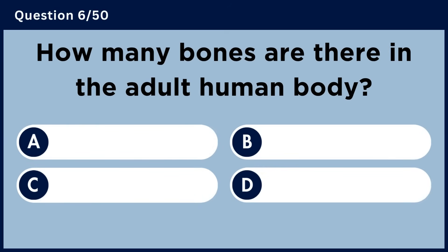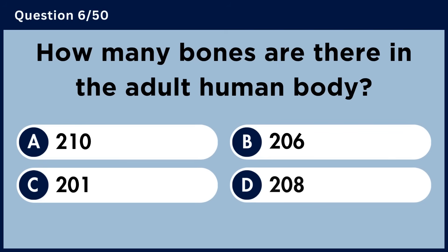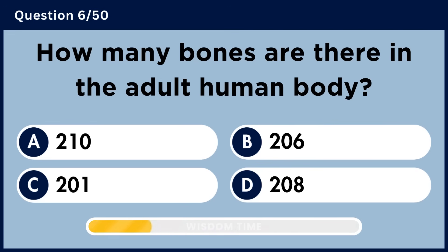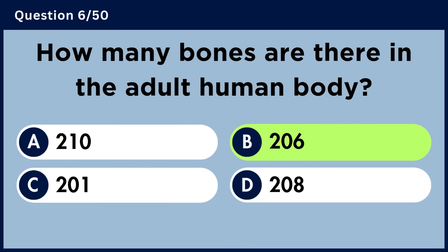How many bones are there in the adult human body? Answer B: 206.